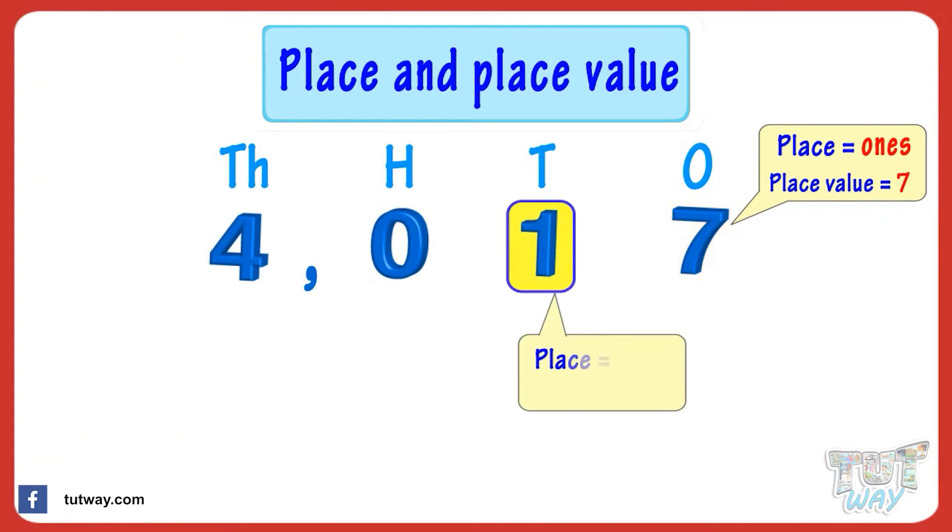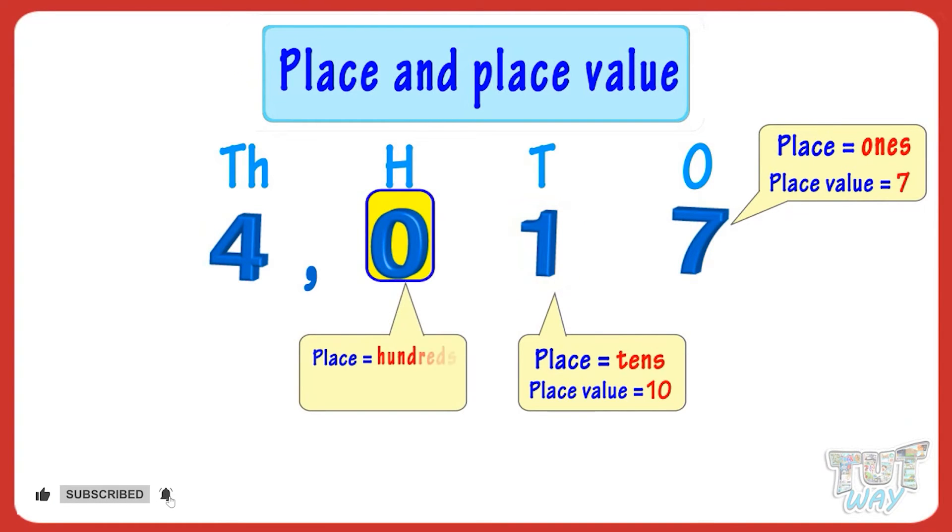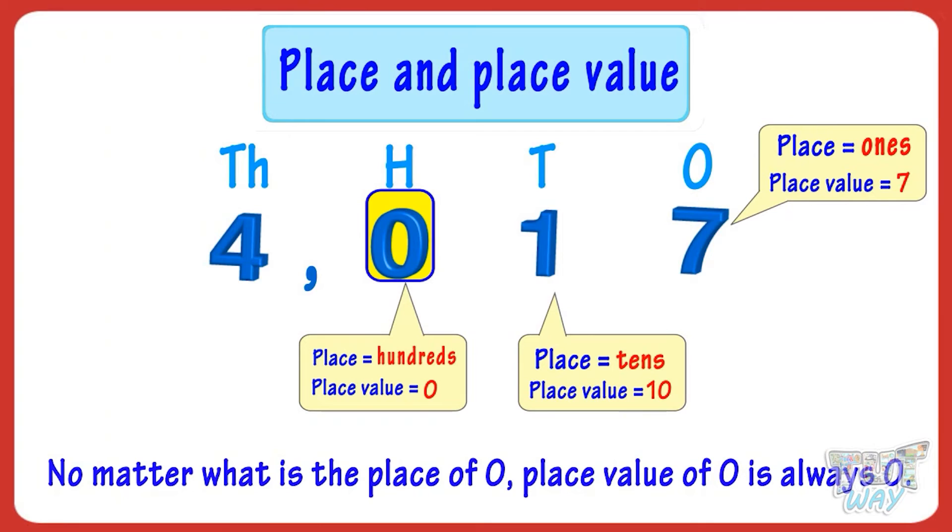Place of one is tens and place value is one ten, that is ten. Place of zero is hundreds and place value is zero hundred or zero. No matter what is the place of zero, place value of zero is always zero.